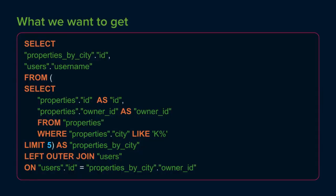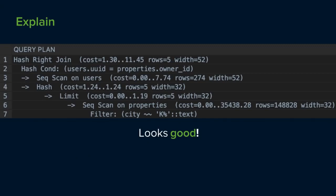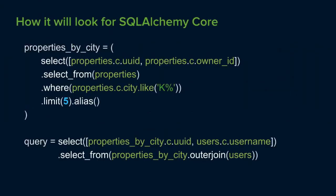What we actually want is a nested select — a correlated subquery — where we apply the limit first, selecting only the fields we need. Then we join users to just those five rows. That's very performant. With SQLAlchemy Core, such a query looks straightforward: on the first line we build the nested select with the limit as a subquery, then we insert it into the outer select and perform the join. You can really quickly understand what's going on underneath.